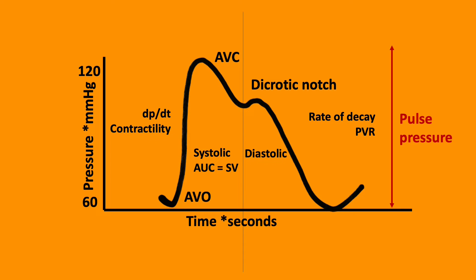The aortic valve opens and blood moves from the left ventricle into the aorta. This is the systolic upstroke, identified by the dP/dT — change in pressure over change in time. The slope of the arterial upstroke is a reflection of myocardial contractility.